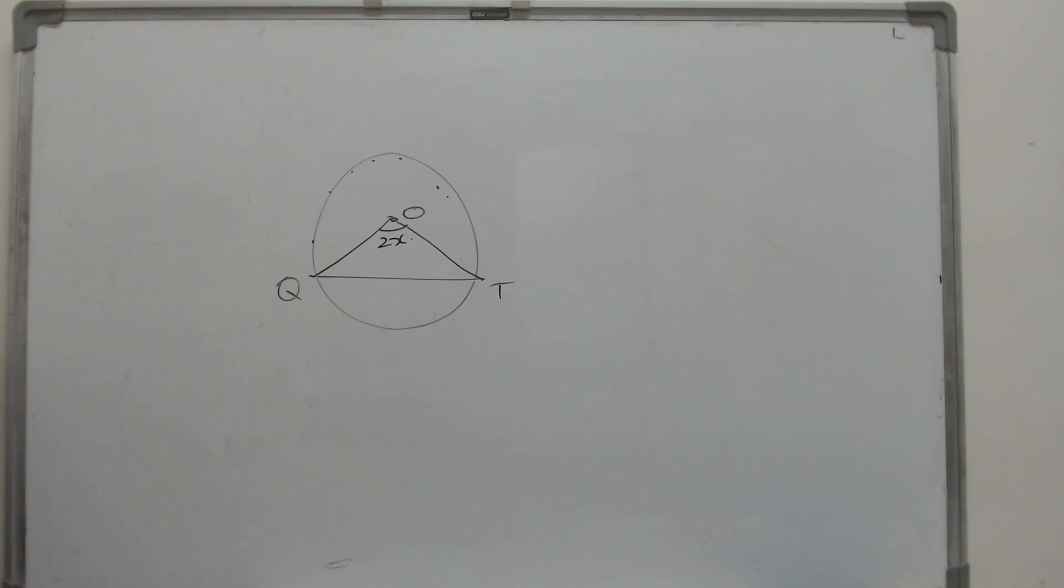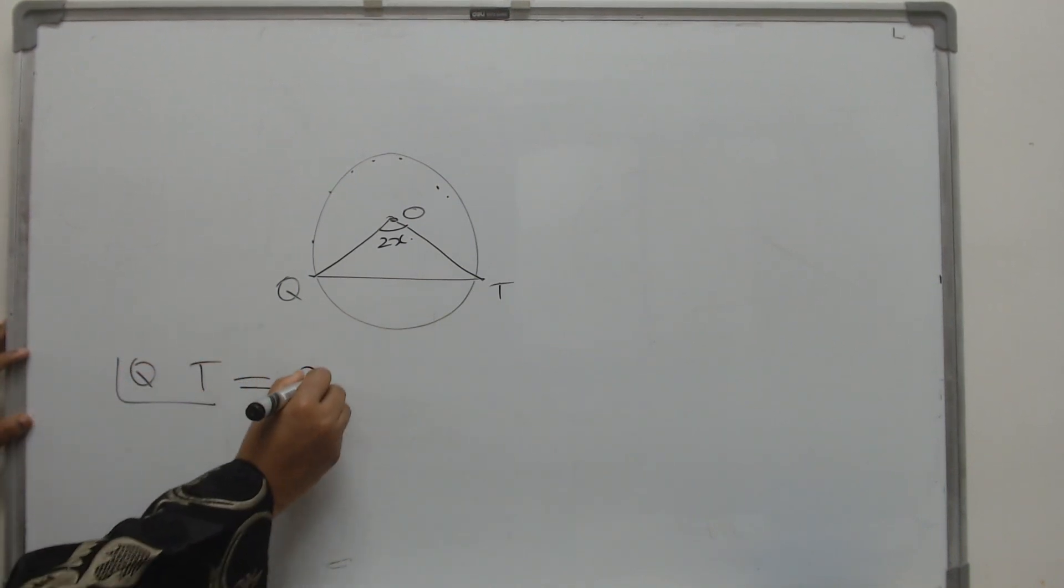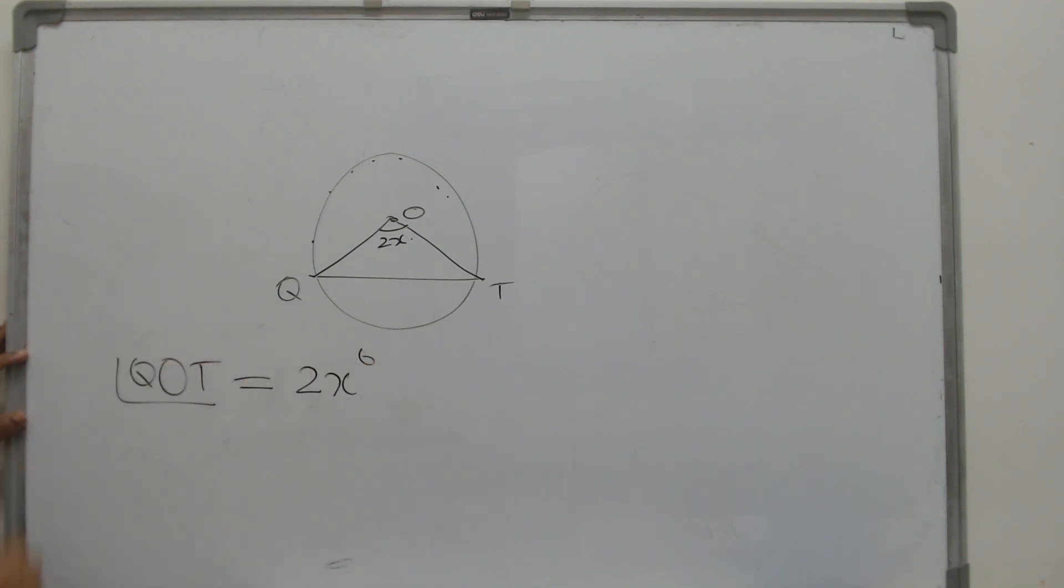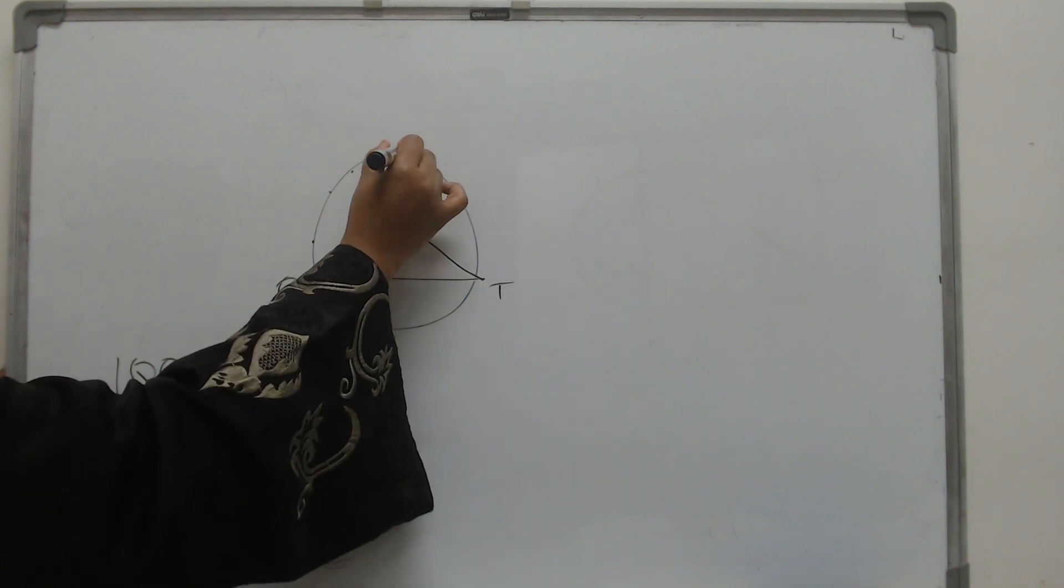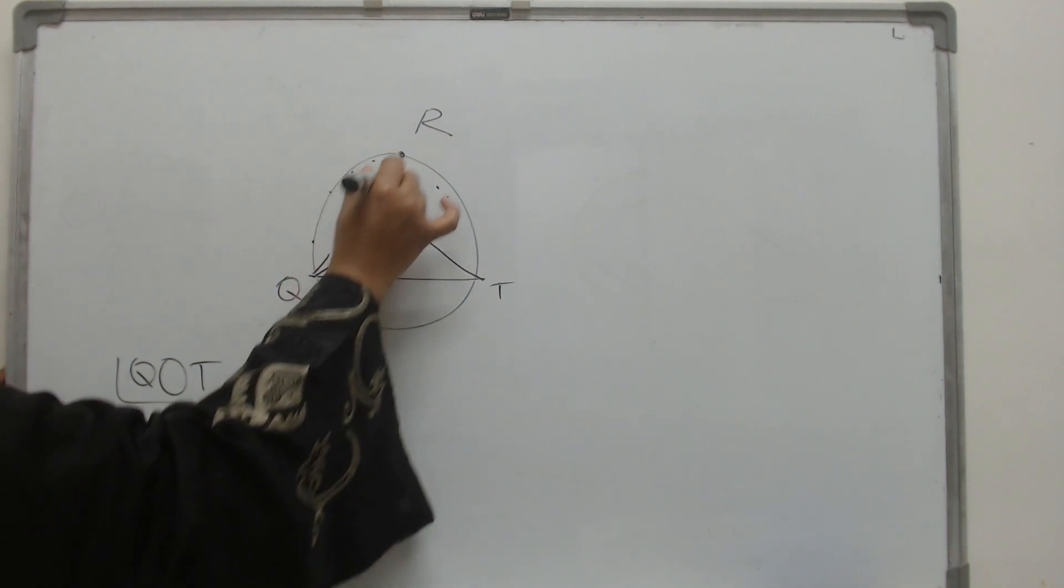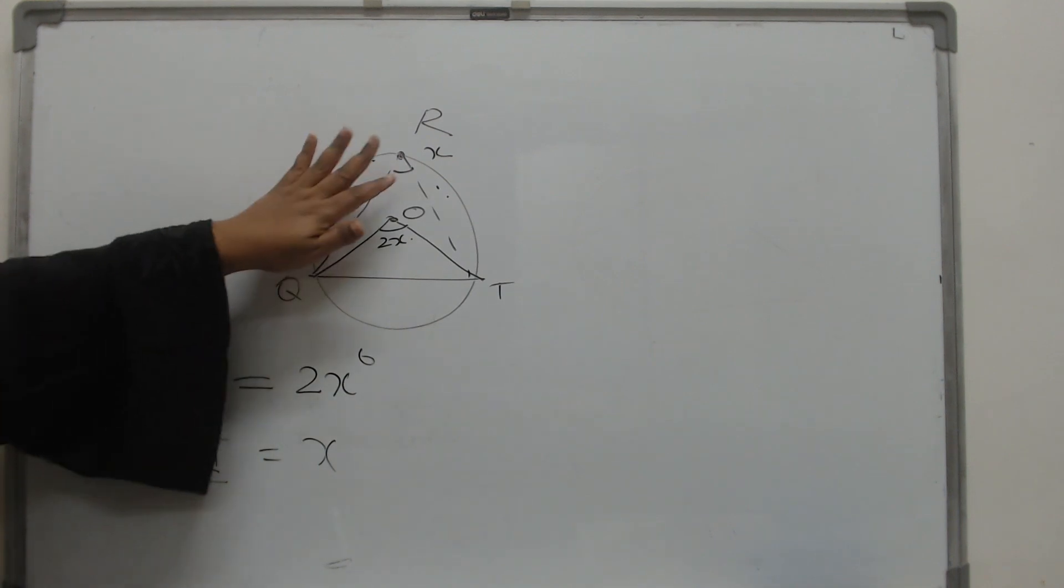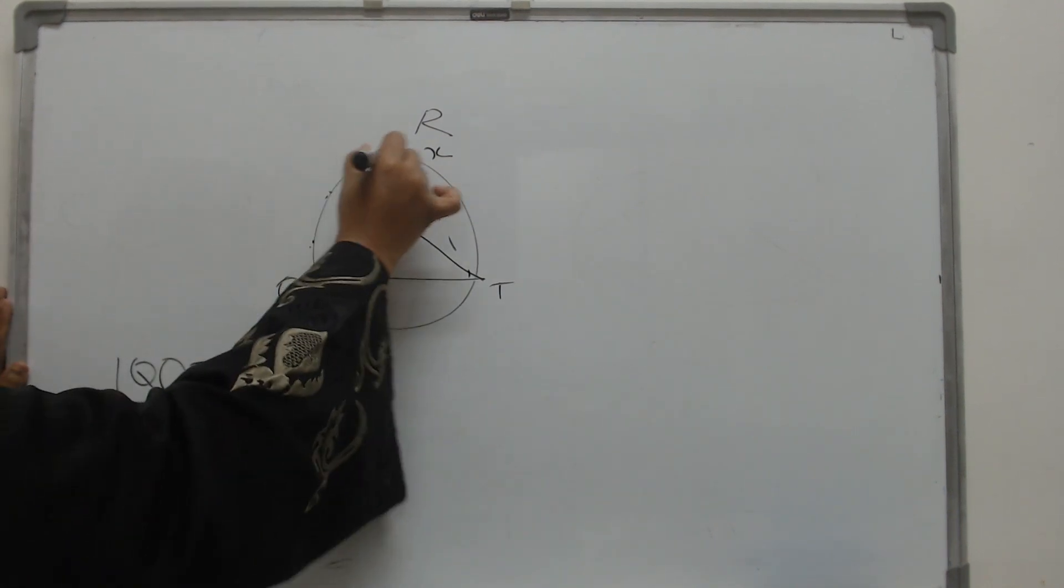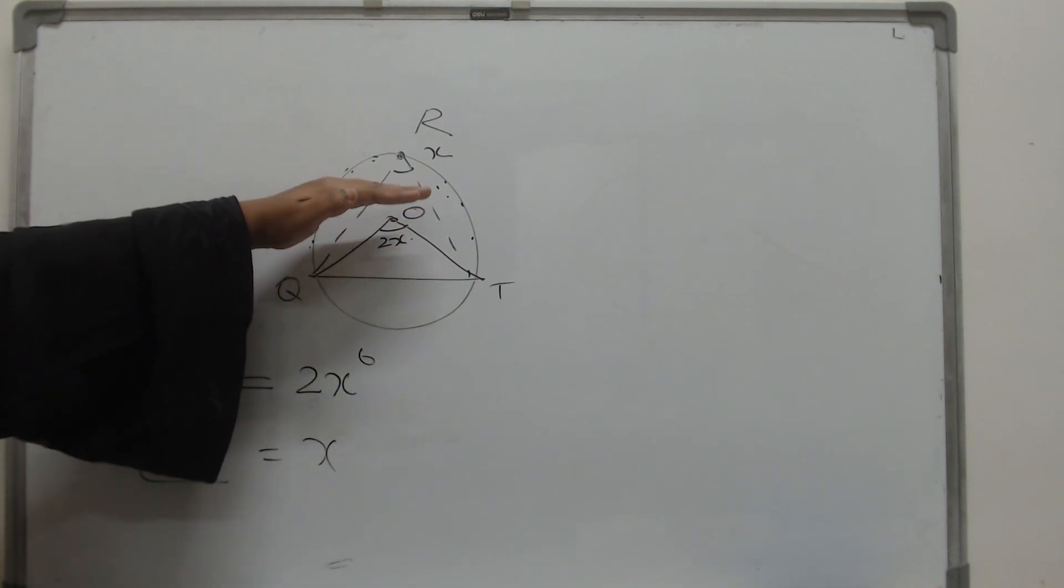If you take a chord QT, if it extends an angle X at the center O, then remember that at any other point on the circle in the same segment, randomly I will take an R here, then at any other point, this will be half. Not just for R, any other point here, it will be half of the angle subtended at the center.